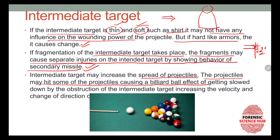Intermediate targets may also increase the spread of projectiles. In the case of shotguns, pellets travel together, and a second batch of projectiles hitting the first batch causes deflection — this is called the billiard ball effect. The projectiles hit one another, causing deflection, being slowed down by obstruction of the intermediate target, and changing direction.